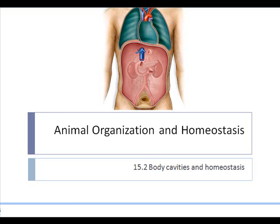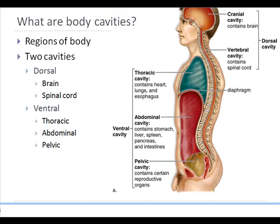A system is made up of many different organs. So in most animals, individual organs will function as part of an organ system. The organ system is the next level of organization. The body is divided into two main body cavities.